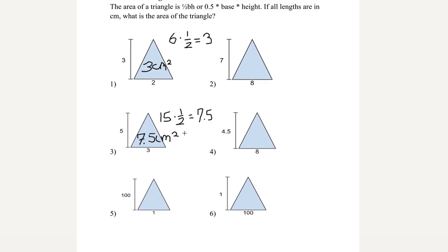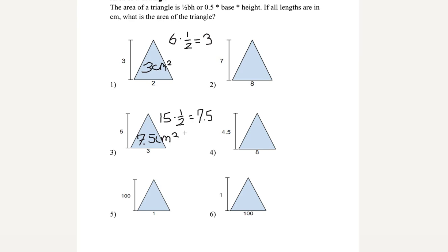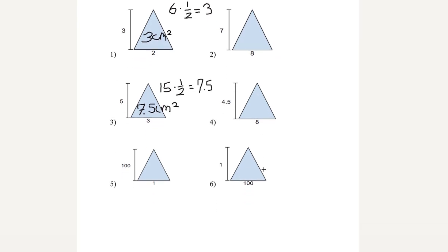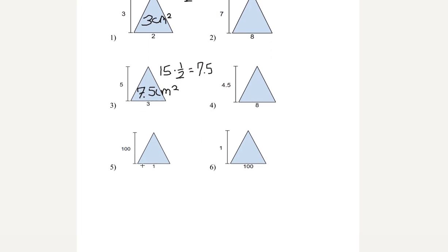It's basically the exact same thing as a rectangle, but instead, it's 1 half of it. Let's look at number 5. We have base of 1 and height of 100. We multiply this together and we're going to get 100. Then our final step again, we multiply by 1 half. And boom. We get 50 centimeters squared.